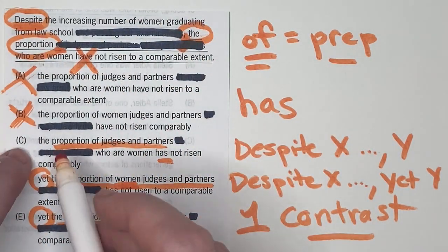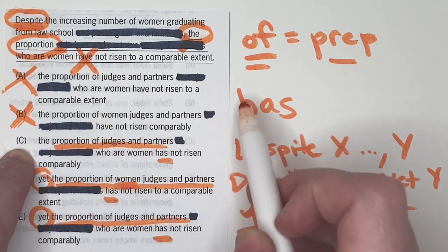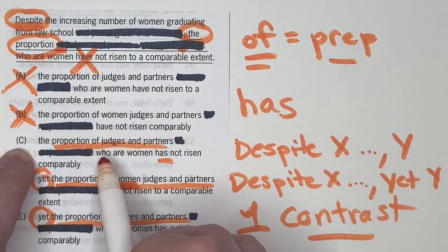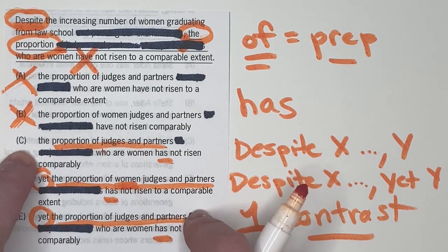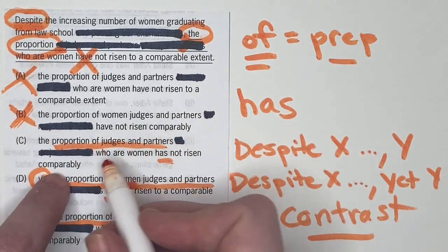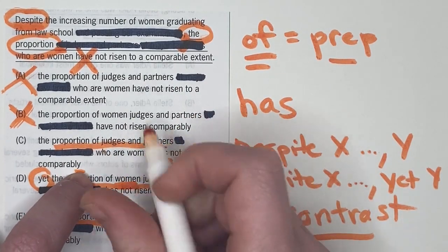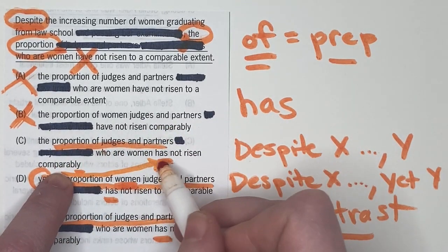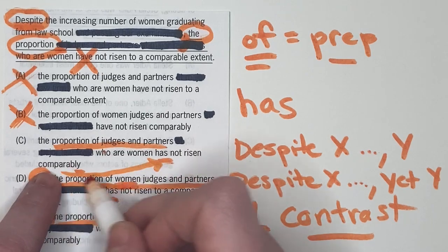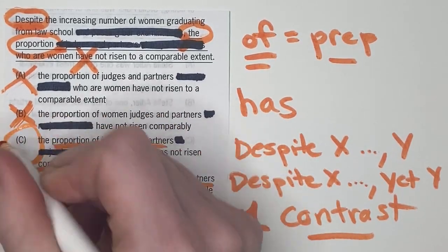So of these options, let's just check C to make sure that it's perfectly clear. So despite the increasing number of women graduating from law school, comma, the proportion of judges and partners who are women has not risen comparably. Great. Absolutely nothing wrong about that. Maybe there might be some confusion about comparably, right? Does that work to end the sentence? So it ends in LY. So that tells us that this is an adverb and it's right next to the verb that it's describing, has not risen, has not risen comparably. That adverb is modifying the verb and it's placed right next to it. So there's no issue whatsoever with the modifiers here.